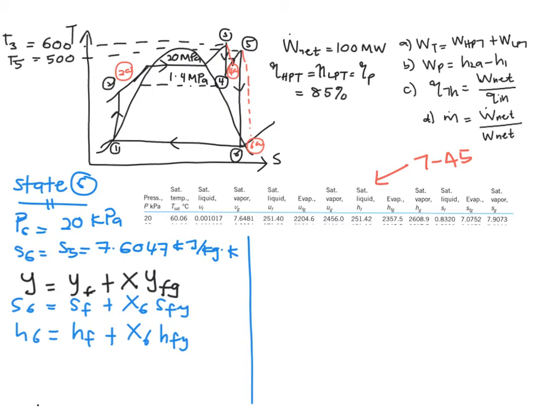Solving for X6, you will obtain X6 equals 0.95.